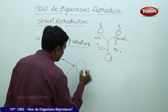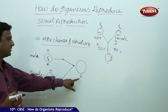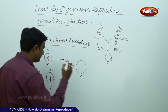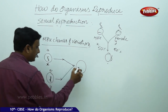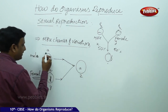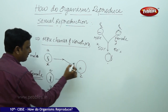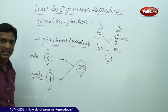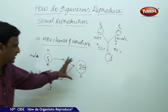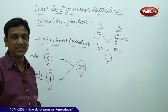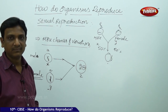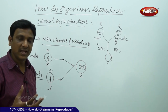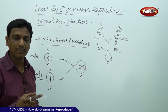This new organism Z is getting the genetic material from female Y — that is A — and also getting A from X. So A plus A equals 2A, meaning the genetic material is doubled in this generation. But is this actually happening? Do you have double the amount of chromosomes compared to your parent?